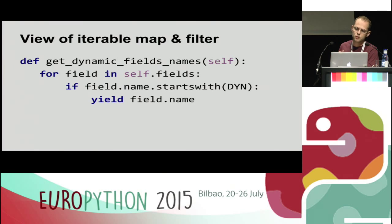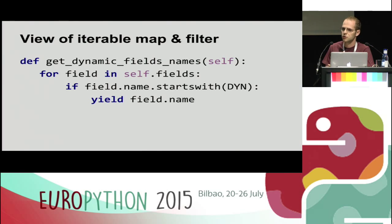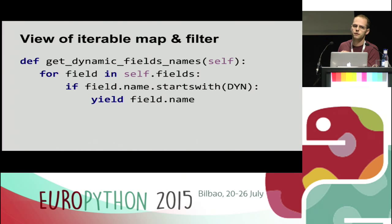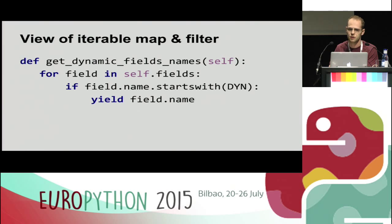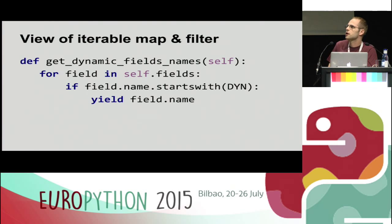What can generators practically be used for? Many people, when they study the subject, don't really know what to do with them. One very common usage is to create a view over a collection — do some filtering and mapping. This is code from a project I worked on. We had a list of fields; some were considered dynamic, starting with some prefix, and we needed to get a list of dynamic field names in different places. So we wrote this simple generator. What's good about it: you don't need to copy-paste the for-if logic everywhere you need the list, and it looks clean and easy to read.